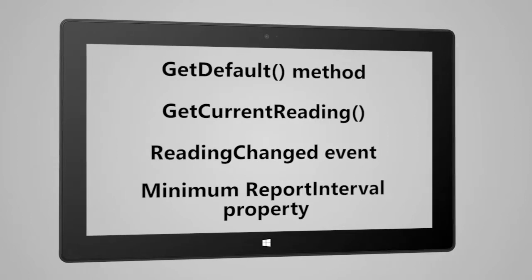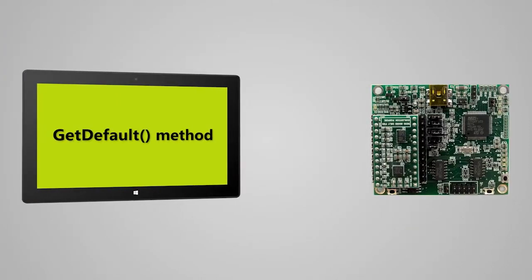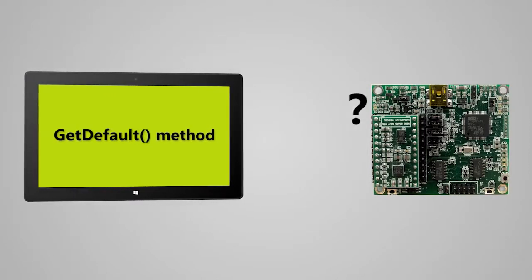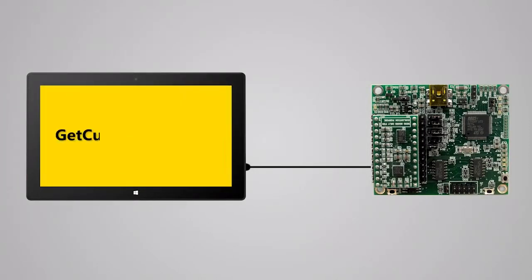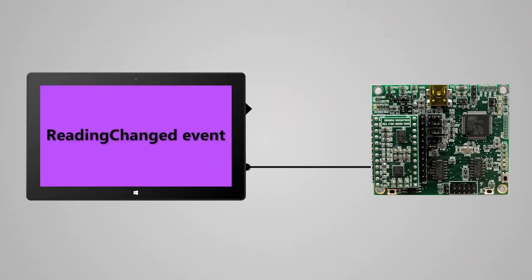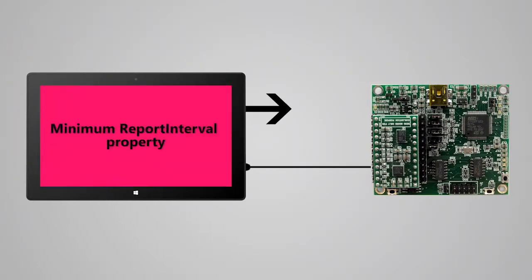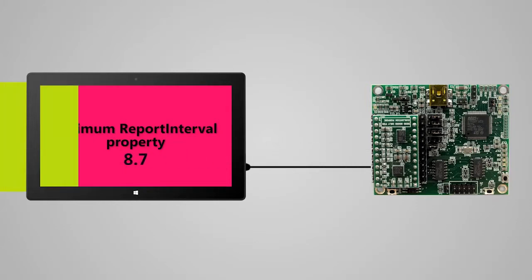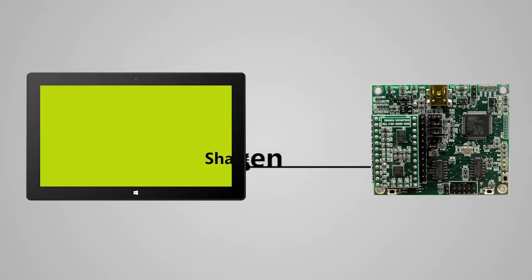Each of these sensors have similar APIs. They let you get a connection to the sensor if it exists, get a one-time reading of the current sensor value, get continuous updates of the current sensor value based on the requested report interval property, and get the minimum report interval supported by the device. The accelerometer also provides the shaken event to let you know if the device has been shaken.